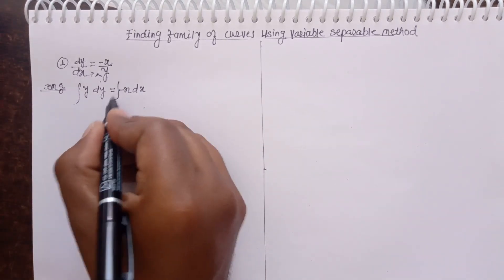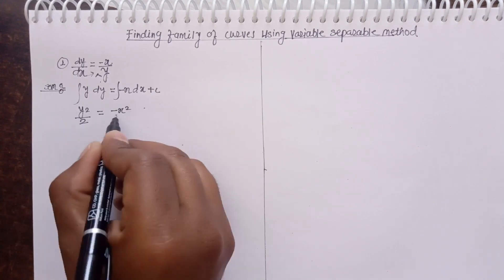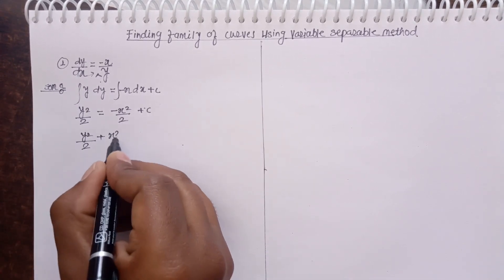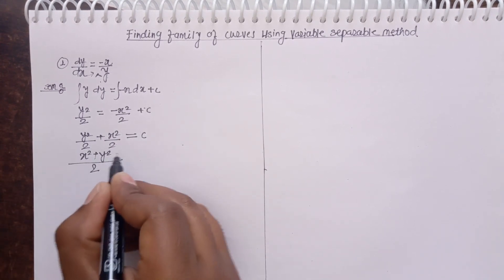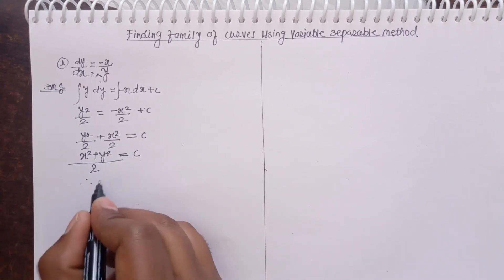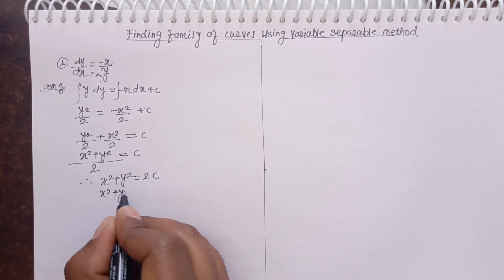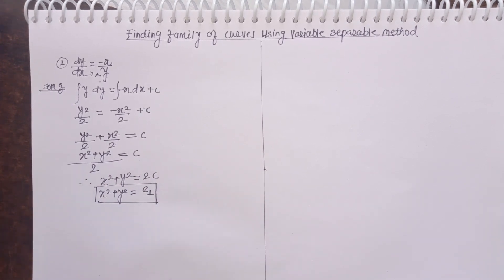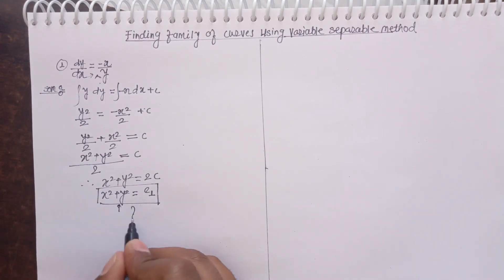Now take the integrations on both sides. So this integration is y square by 2. This is minus of x square by 2 plus c. So here, y square by 2 plus x square by 2 equals to c. So 2 common is x square plus y square equals to c. And nothing but this is 1. This is also constant. Now take the solution. This is nothing but a family of circles.